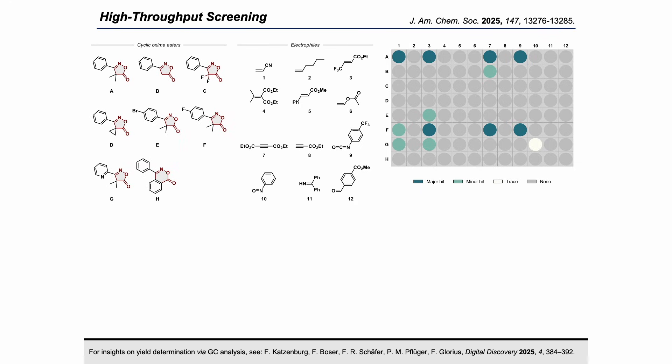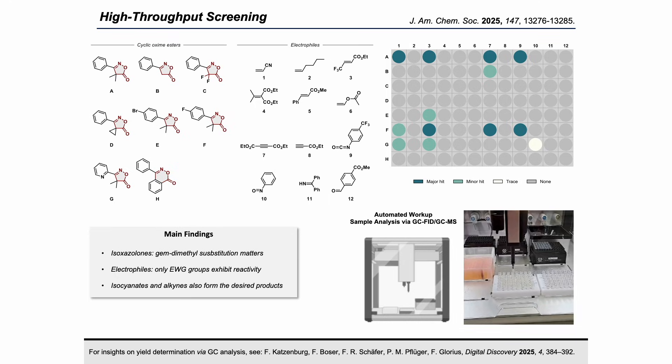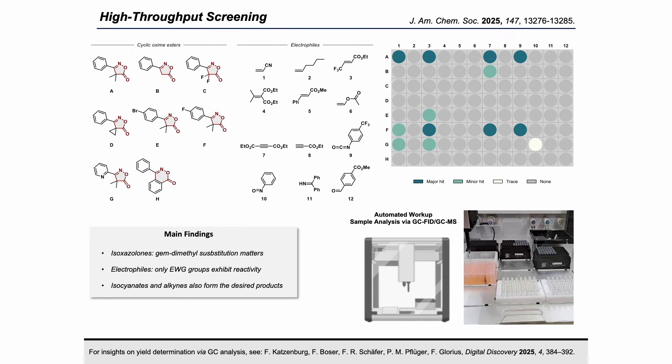Once we were confident of the reaction mechanism, we explored its applicability by high-throughput screening. For the design of the 96-well plate, we chose a series of cyclic oxime starting materials and coupling partners with different electronic and steric demand. Our results were not too optimistic, but thanks to high-throughput experiments we quickly shed light on key aspects, such as the importance of the gem-dimethyl substitution pattern in the isoxazole, the tendency to react for only electron-poor olefins, and the promising reactivity of isocyanides and disubstituted alkynes. For more details on sample analysis via GC and automated workup with our pipetting robot, please refer to our supporting information.